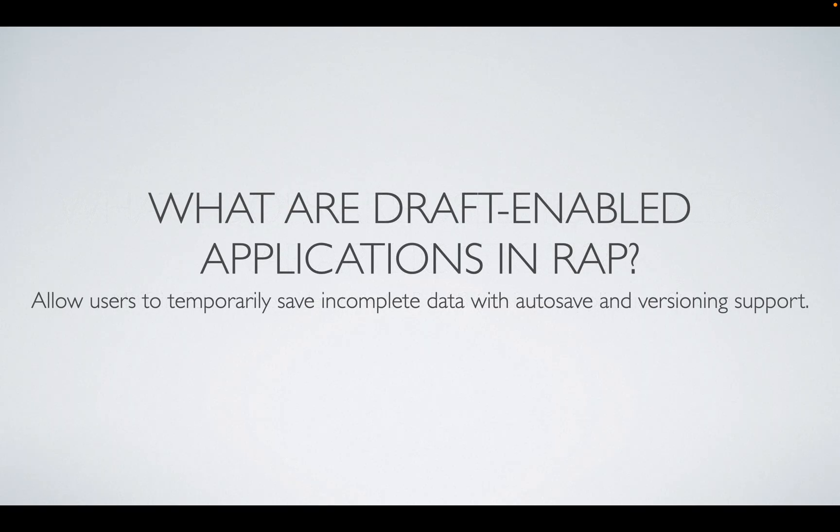What are draft-enabled applications in RAP? Draft enablement allows users to save incomplete data temporarily before final submission. It provides auto-save, versioning, and parallel session handling. When draft enablement is used, a temporary draft table is created. Data is saved there, and once you finalize and save properly, the data is deleted from the draft table and updated in the original table.